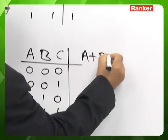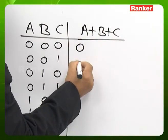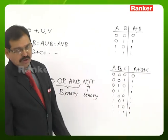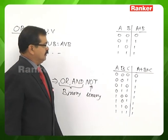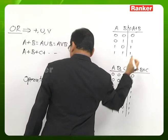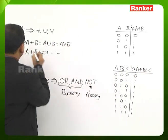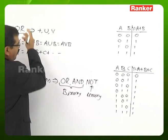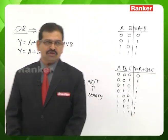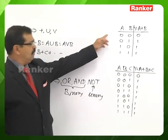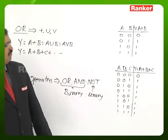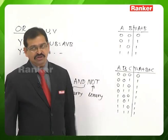For OR operation on three Boolean variables, except for the first row, all remaining rows give a result of one, while the first row gives zero. We name the result variable Y. The OR operation can be defined as: the result is zero if and only if all Boolean variables are zero, or equivalently, the result is one whenever at least one variable is one.